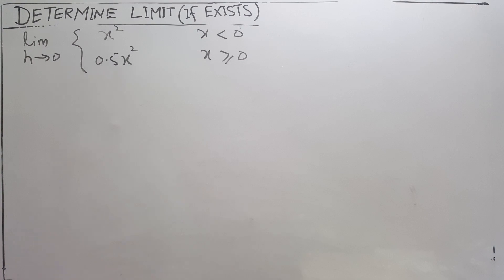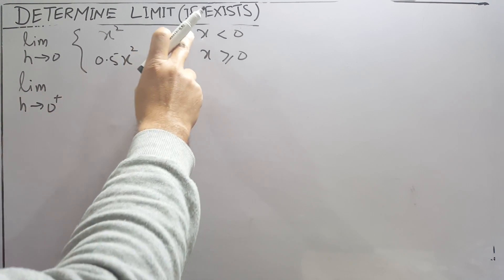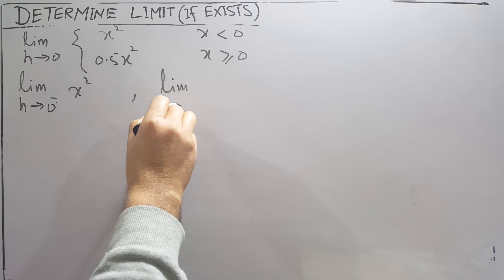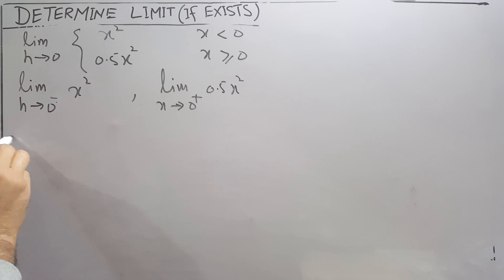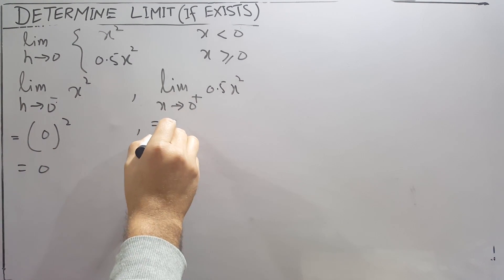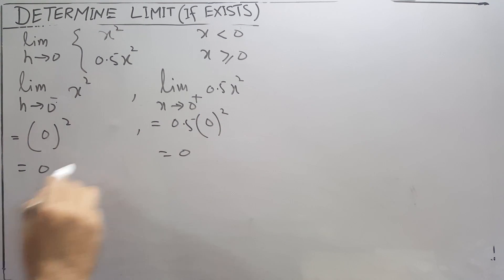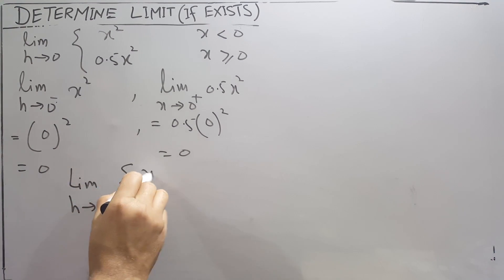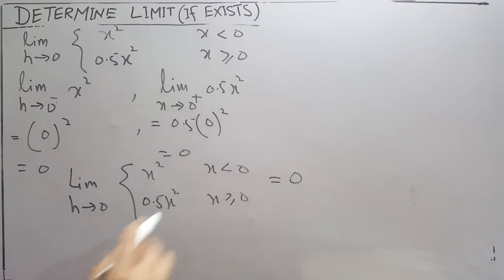For the last problem of this type, as x approaches 0 from the negative side we have x squared, and from the positive side we have 0.5x squared. Applying the limit: 0 squared is 0, and 0.5 times 0 squared is also 0. Both the left-hand and right-hand limits are equal, so the limit as x approaches 0 is 0.